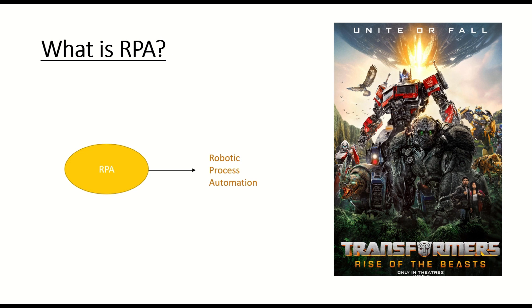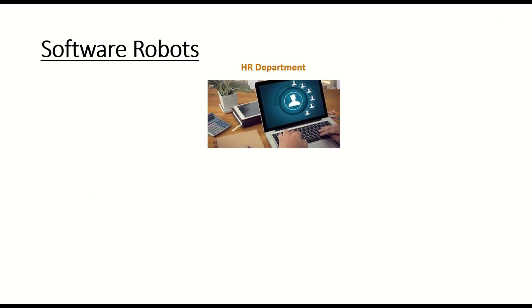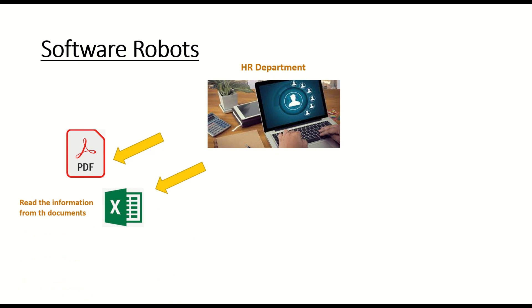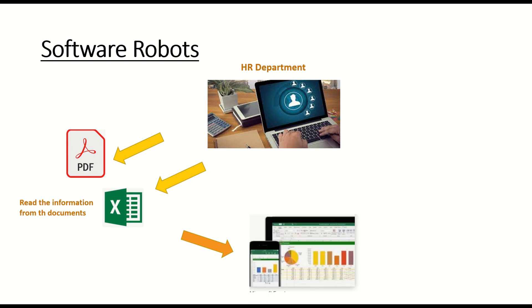Robotic Process Automation is a software robot which can mimic human activities in software products. For example, every company has an HR department. Their main tasks include reading resumes of candidates, shortlisting them, and reading employee information from Excel. Our software robot — RPA — will automate processes involving reading PDFs or Excel, understand the data, and complete the process end to end, including shortlisting candidates and sending email meeting invites.